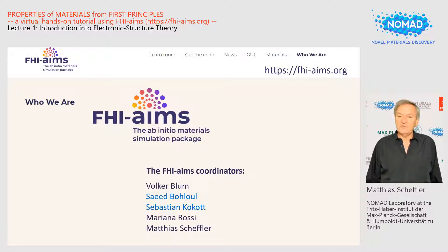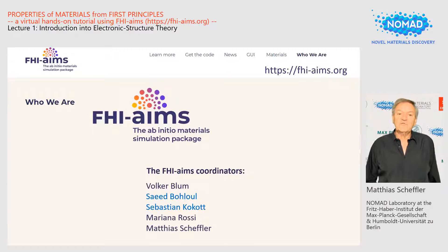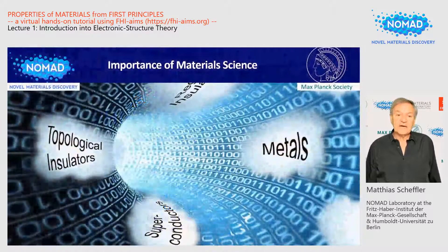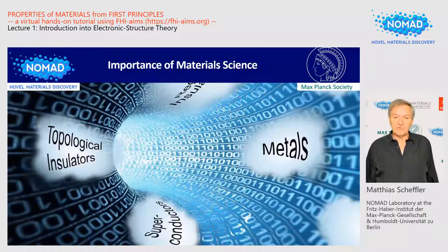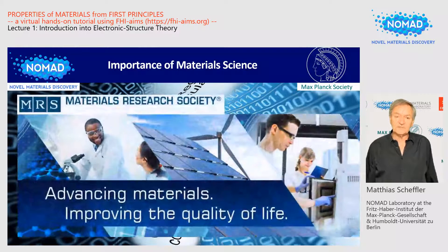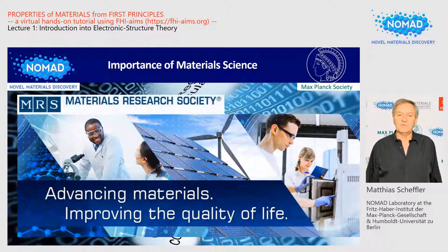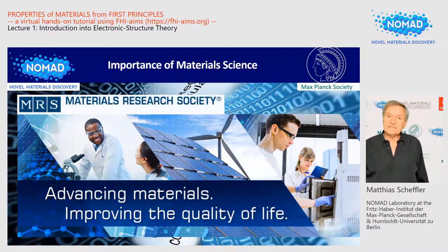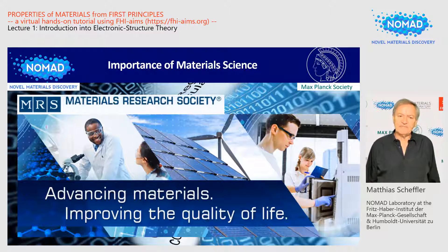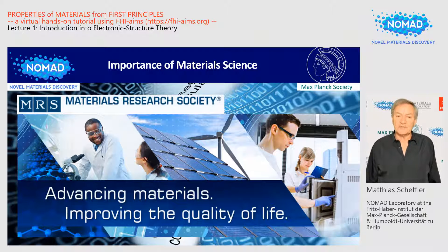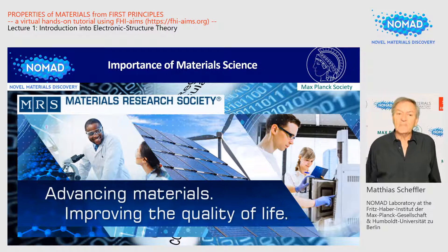As I said before, the code was developed mainly, though not only, for material science. Most of you have a material science background, so there is no need to explain in detail why material science is important. However, as this is the very first lecture, I have one slide here which I took some time ago from the US Materials Research Society: 'Advancing materials, improving the quality of life.' Prosperity and lifestyle of our society are very much governed by achievements of condensed matter physics, chemistry, and material science, because new products for the energy, environment, health, mobility, IT sectors, and so on largely rely on improved or even novel materials.